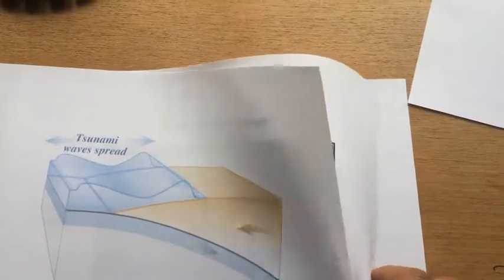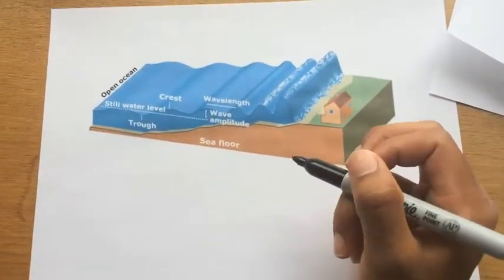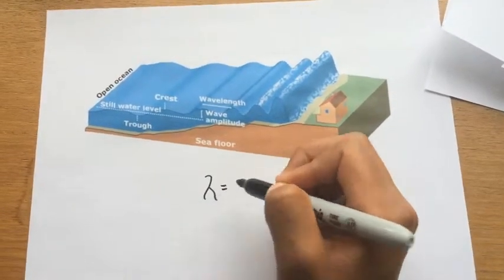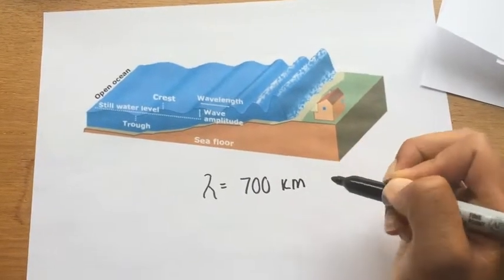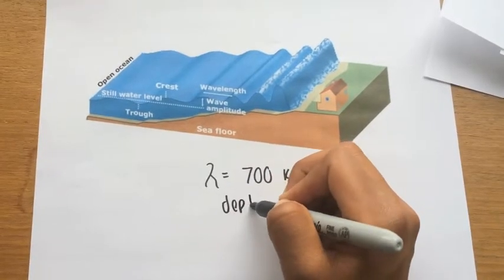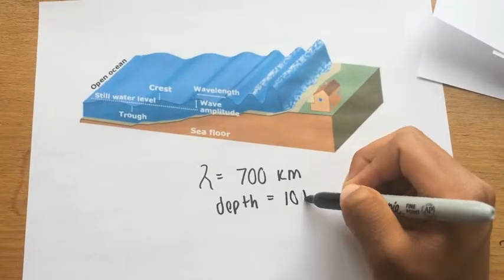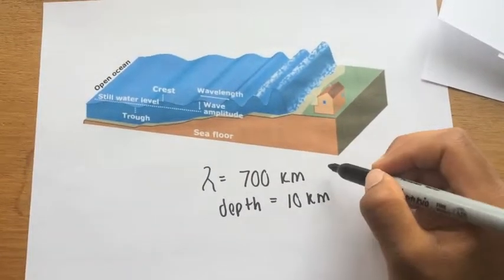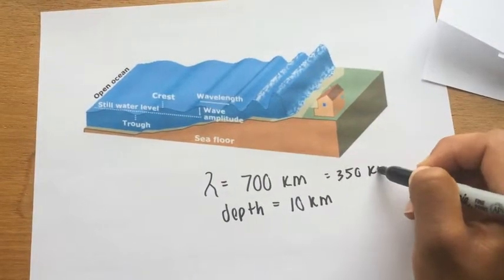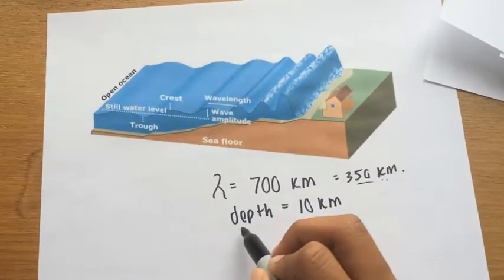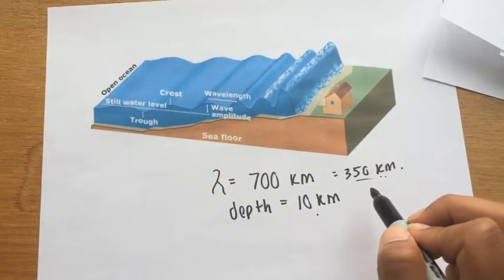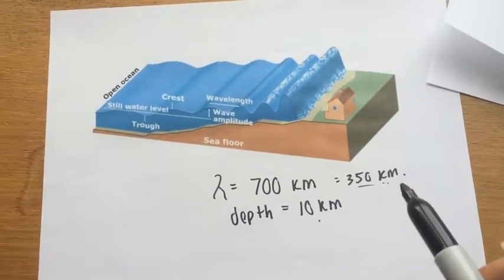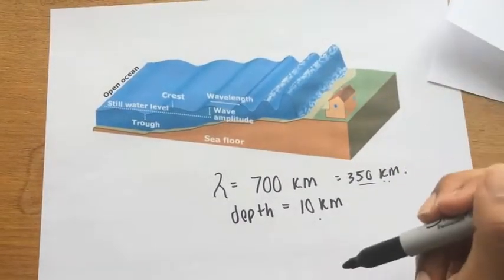Why does a tsunami become so large? One characteristic of a tsunami is that they have an incredibly long wavelength — often equivalent to about 700 kilometers, which is huge. The depth of the water in the deepest parts of the ocean is maybe 10 kilometers. Half of the tsunami's wavelength would be 350 kilometers, which is so astronomically larger than the depth that at no point is depth greater than this. So in all parts of the ocean, tsunamis are always considered shallow water waves, which means their speed is determined solely by the depth.